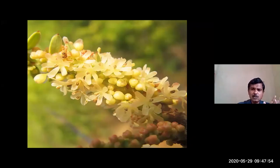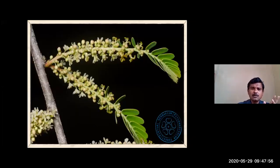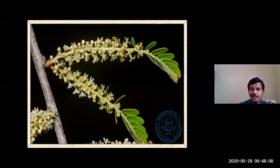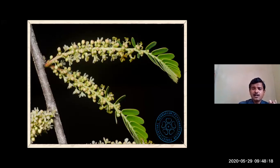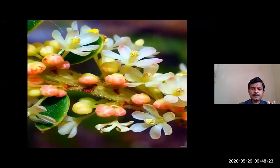You can clearly observe these things - flower buds are also present. Flower buds along with developed flowers are visible. Usually the leaves tend to fall when the development of the flower starts. The leaves are originating from the axillary region, from the axil of the leaf. Here you can clearly observe the color of the flowers.